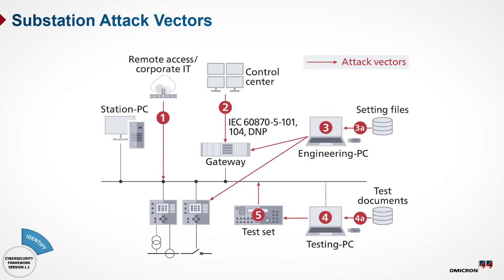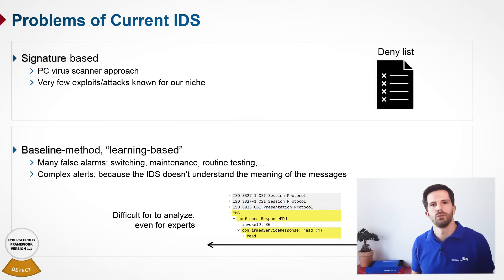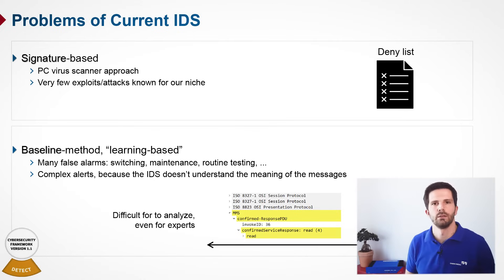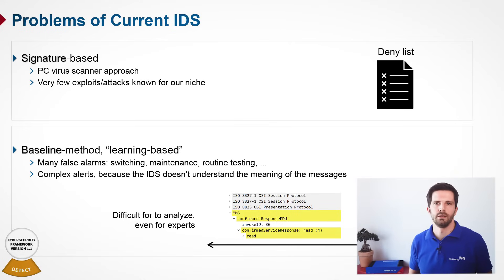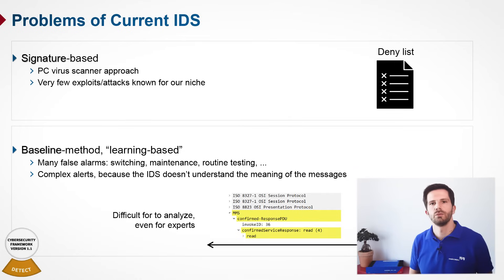When applying intrusion detection in a substation or generally in OT systems, there are mainly two approaches available, both with certain drawbacks. The first and oldest approach is the signature-based approach, the same as with a virus scanner. The problem is it can only detect attacks which are known and have an entry in the deny list, so only known threats can be detected. For power systems, this is clearly not a good approach.